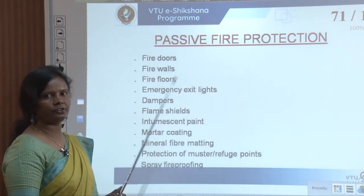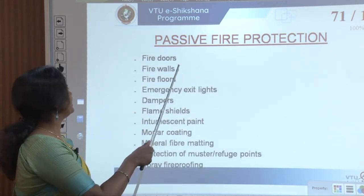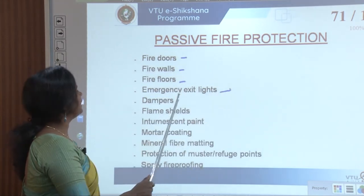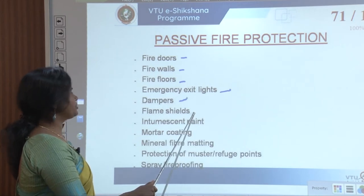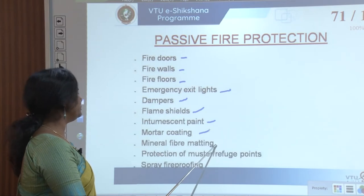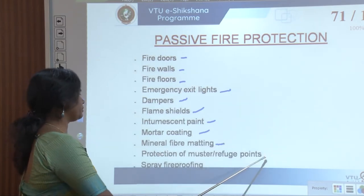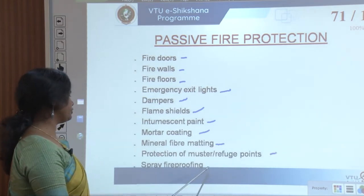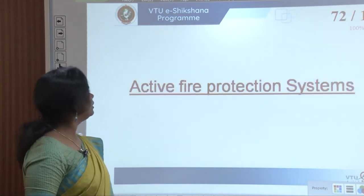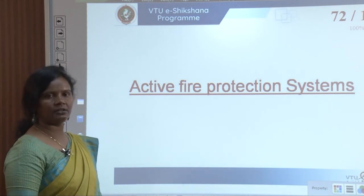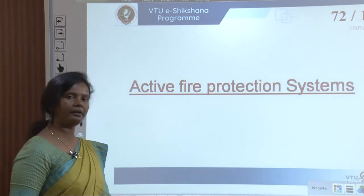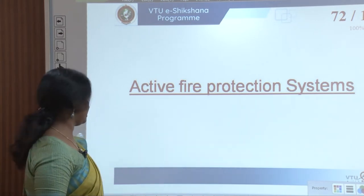Different types of passive fire protection include: fire doors, fire walls, fire roofs, emergency exit lights, dampers, flame shields, intumescent paint, mortar coating, mineral fiber matting, protection of master refuge points, and spray fireproofing. We will now look at a few active and passive fire protection systems in detail.